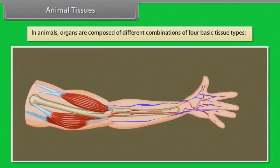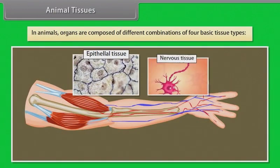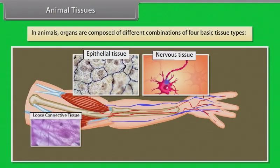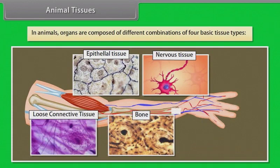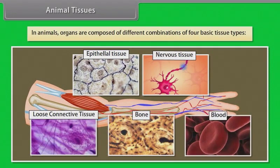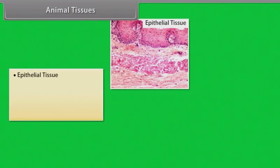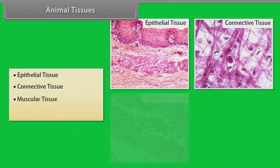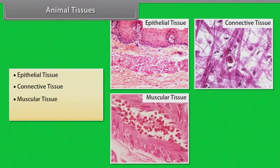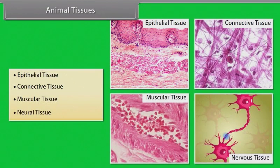Animal tissues. In animals, organs are composed of different combinations of four basic tissue types. They are epithelial tissue, connective tissue, muscular tissue, and neural tissue. Let's know about them in detail.